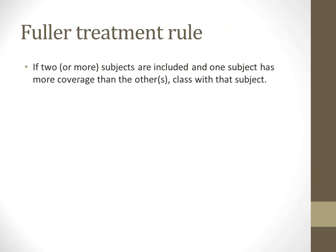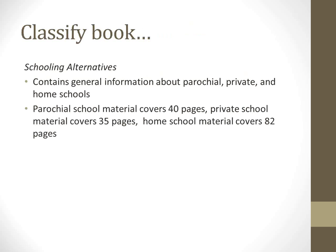The fuller treatment rule is basically just what it sounds like. If two or more subjects are included in the book and one subject has more coverage than the others, choose the number that goes with that subject. For example, we have a book called 'Schooling Alternatives' with information about parochial, private, and home schools. Let's say parochial schools covers 40 pages, private school covers 35 pages, and home school materials covers 82 pages. According to the rules of Dewey, you want to go with the one that covers the most material, so that would be home school.